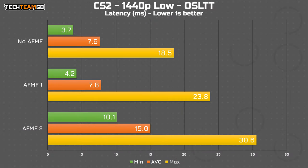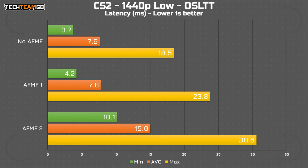If we switch to the latency data, you'll see why you really shouldn't enable AFMF either way in any sort of competitive game like this. The average latency jumped from 7.6 milliseconds to 15 milliseconds — literally double. By enabling AFMF here, you are making yourself wait twice as long as your competitors to see new frames, which is a really bad idea for your playing experience. But what about in a less competitive game and a more demanding one, like Cyberpunk 2077?